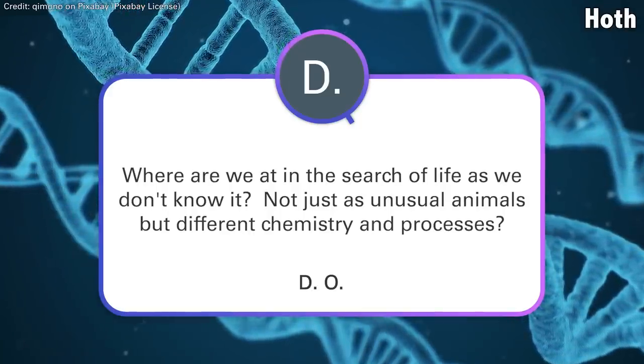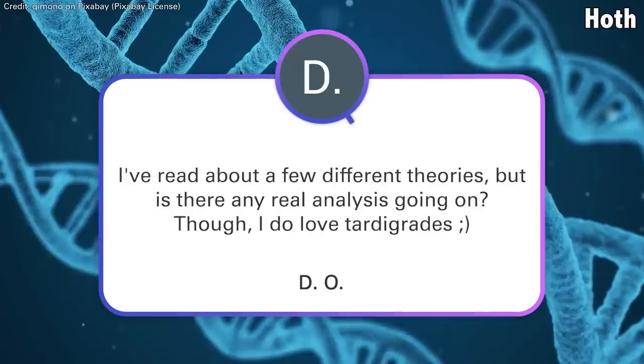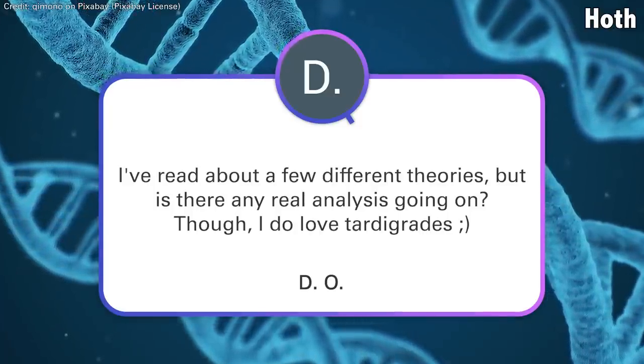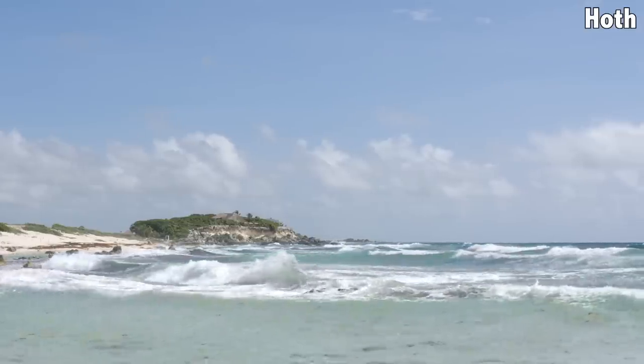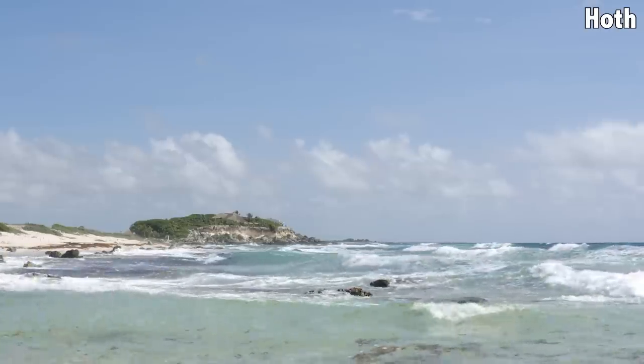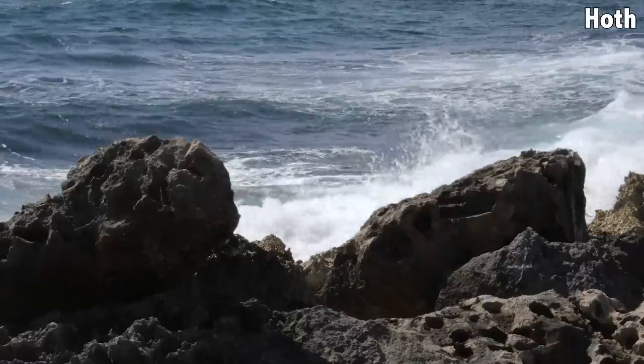The next question is about where we are in the search for life as we don't know it — not just unusual animals, but different chemistries and processes. The search for life at this point is very much about life as we know it, because we know it. Wherever we find liquid water on Earth — at the bottom of the oceans, inside nuclear reactors, high up in the atmosphere, deep under rock — we find life. So it makes sense to look for liquid water on other places in the solar system.